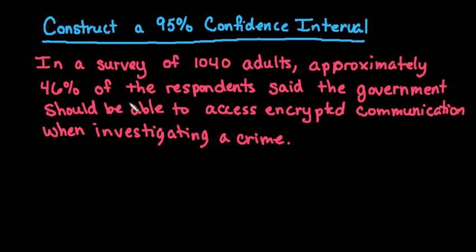Hi, for this video I want to show you how to construct a 95% confidence interval. The situation we have here is: in a survey of 1040 adults, approximately 46% of the respondents said the government should be able to access encrypted communication when investigating a crime.